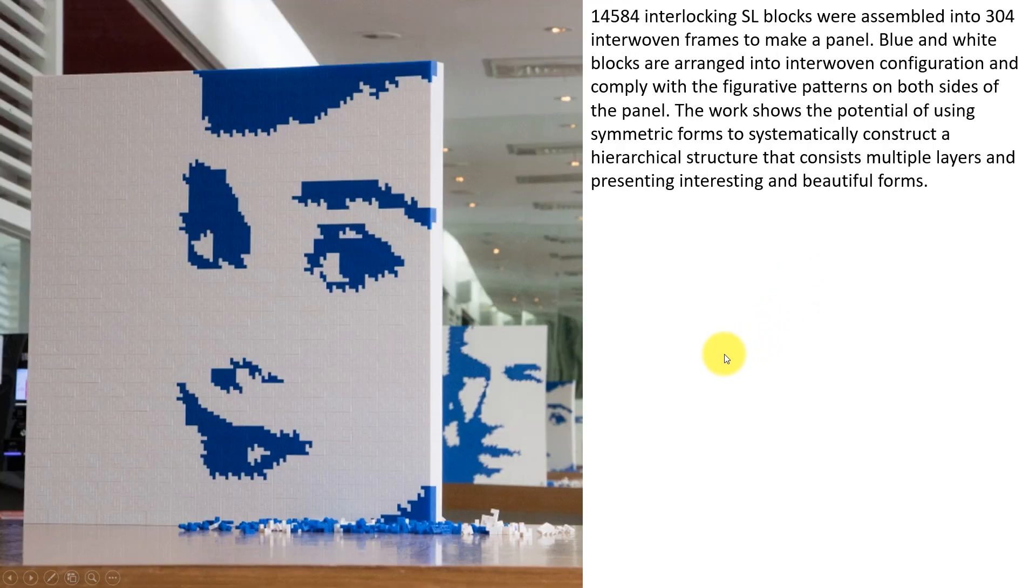This is another example which consists of more than 14,000 interlocking SL blocks. These blocks were first assembled into 304 interwoven frames to make this panel, the size of 60 times 60 centimeters, using blocks which are about 2.4 centimeters in length. We use blue and white blocks and arrange these blocks into interwoven configurations, and also we need to comply the whole structure with figurative patterns on both sides of the panel.